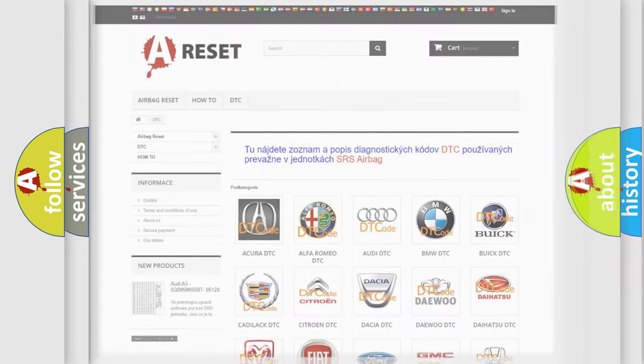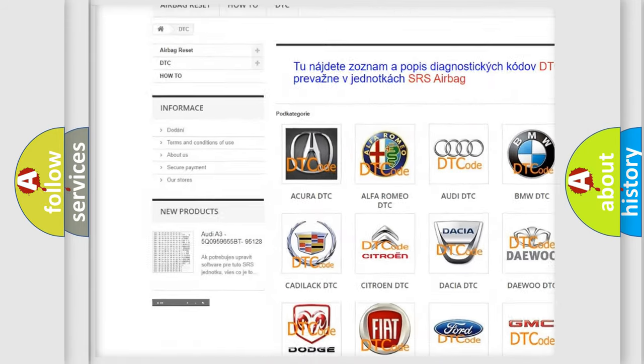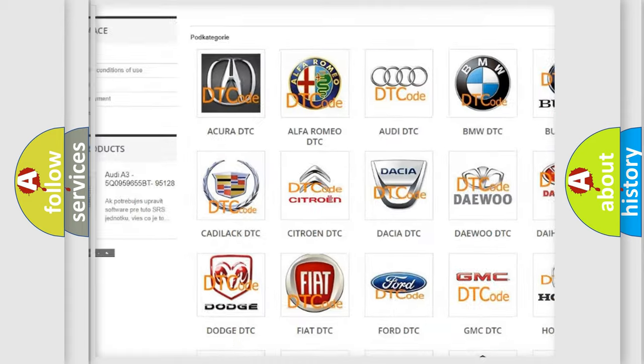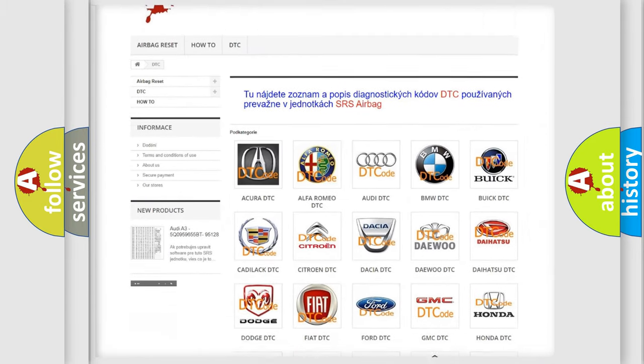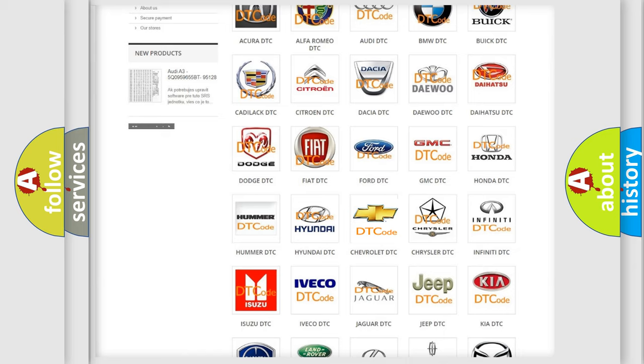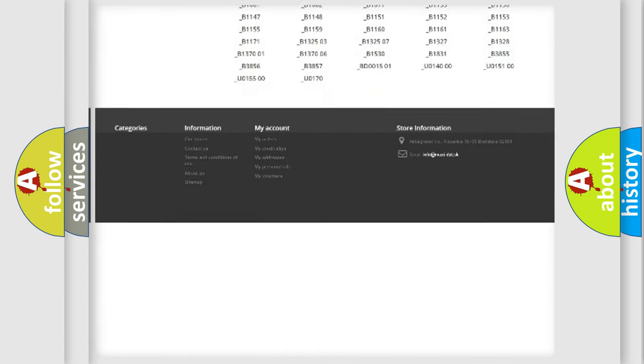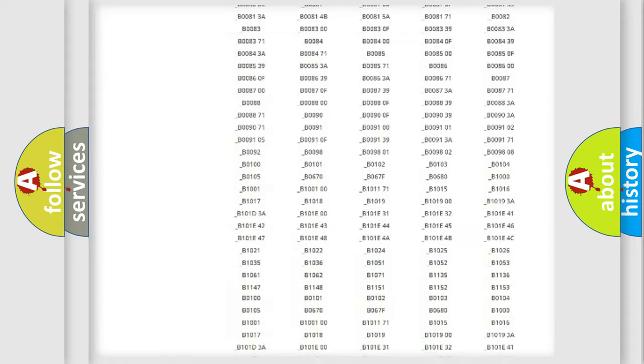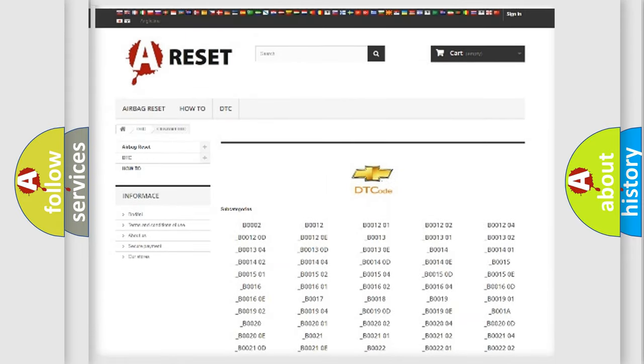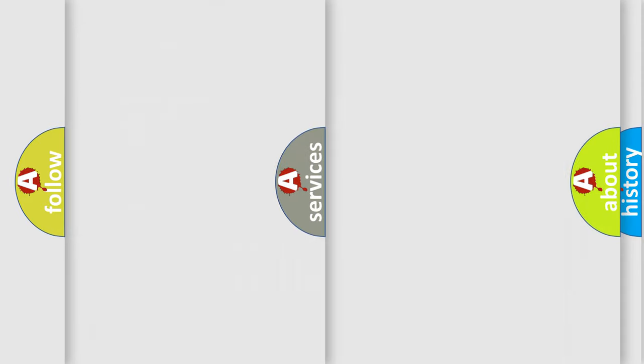Our website airbagreset.sk produces useful videos for you. You do not have to go through the OBD2 protocol anymore to know how to troubleshoot any car breakdown. You will find all the diagnostic codes that can be diagnosed in Chevrolet vehicles, also many other useful things.